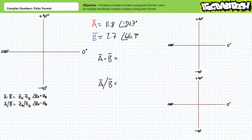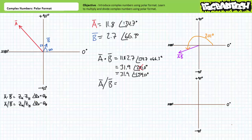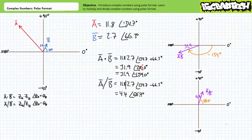Consider complex number A with a magnitude of 11.8 at an angle of positive 134.7 degrees — A is inside the second quadrant. Complex number B has a magnitude of 2.7 at an angle of 66.3 degrees — B is inside the first quadrant. If we perform A times B, we multiply the magnitudes and add the angles to obtain 31.9 at an angle of 201 degrees. However, we need to reformat the angle to comply with the positive 180 degree counterclockwise limitation, so 201 degrees is more conveniently expressed as negative 159 degrees. Dividing A by B yields 4.4 at an angle of positive 68.4 degrees.